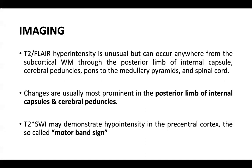On imaging, T2 FLAIR hyperintensity is unusual but can occur anywhere from the subcortical white matter through the posterior limb of the internal capsule, cerebral peduncle, pons to medullary pyramids, and spinal cord. Changes are usually most prominent in the posterior limb of the internal capsule and cerebral peduncles. T2-weighted SWI imaging may demonstrate hypointensity in the precentral cortex, also known as the motor band sign, as seen in this case.